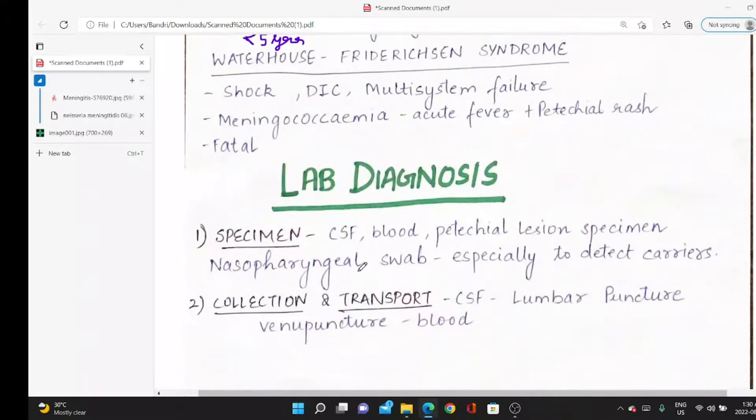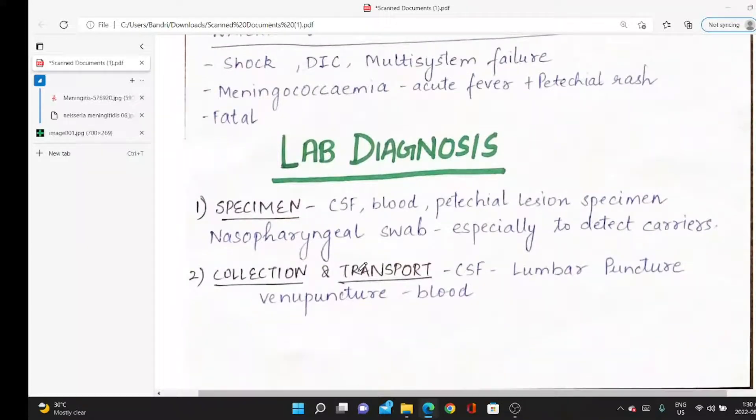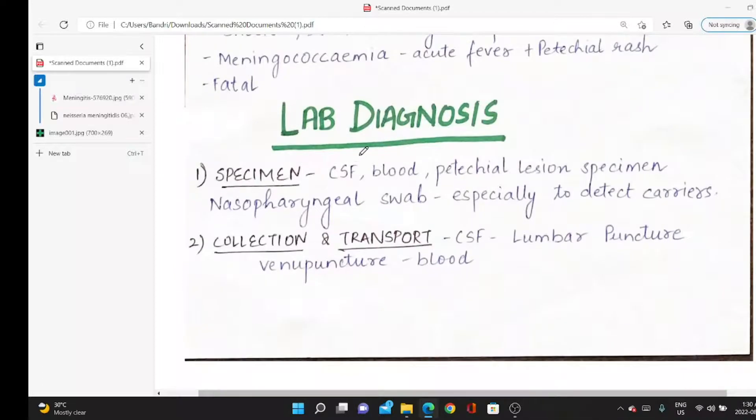How do we diagnose it? First, take a specimen. Cerebrospinal fluid can be collected since it affects meninges. Blood can be taken. Petechial lesions—specimen can be collected. Nasopharyngeal swab can be collected from the nasopharyngeal region.